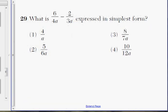Okay, number 29, we're trying to express this in simplest form, therefore combining these two. Let's find the common denominator between 4a and 3a. Find the lowest common denominator between 4 and 3. That's actually going to be 12.